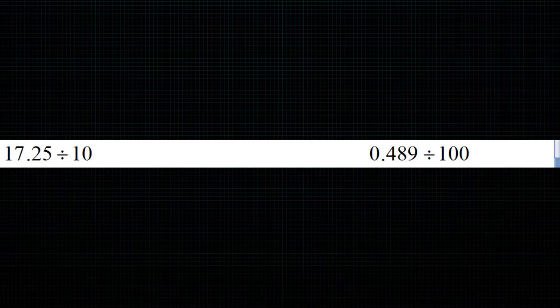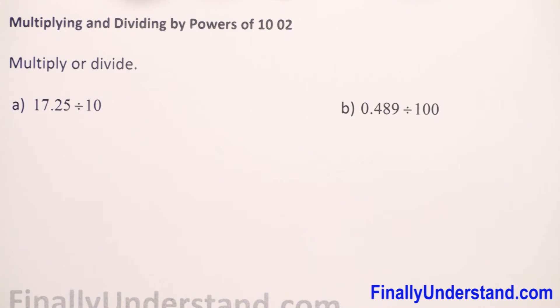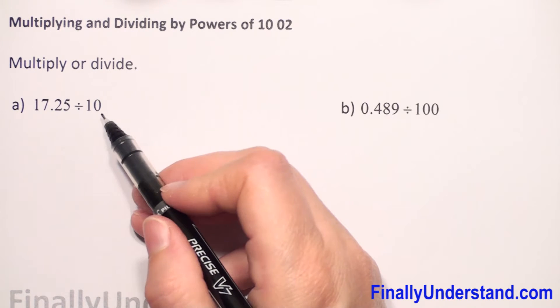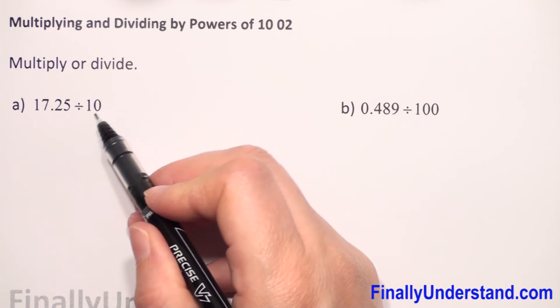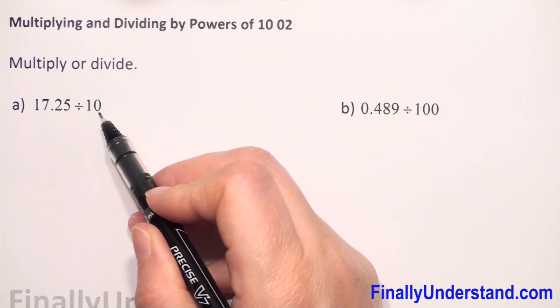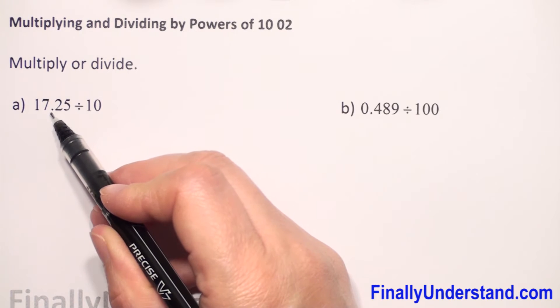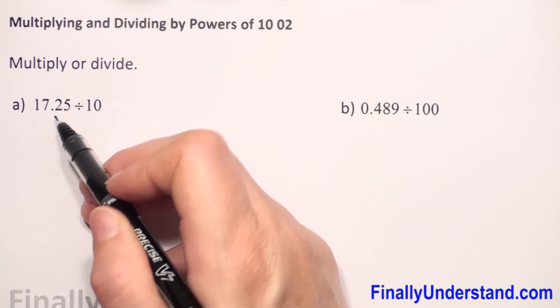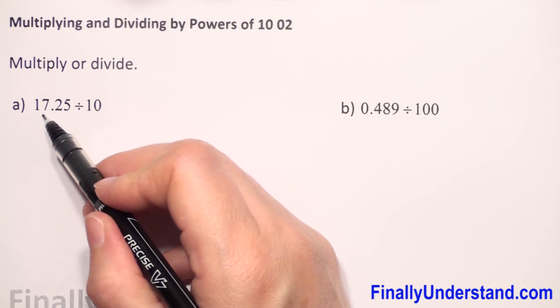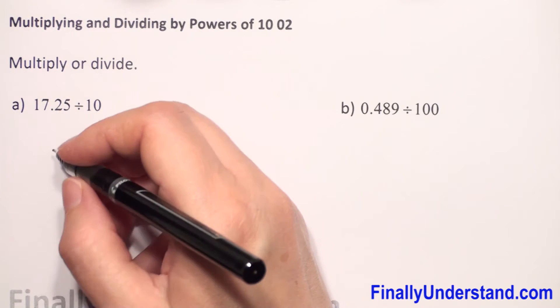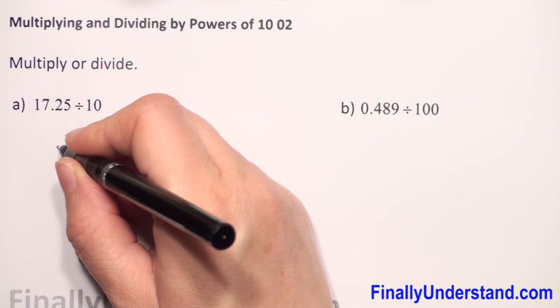We have division by powers of 10, so how do we do this? We have to check how many zeros we have in our number. We have one zero, so when we have division with one zero, we have to move the decimal point one place to the left. When we have division, we move to the left.